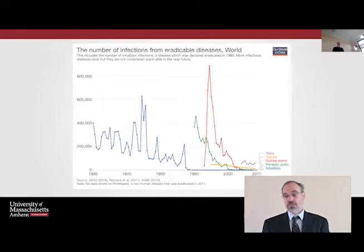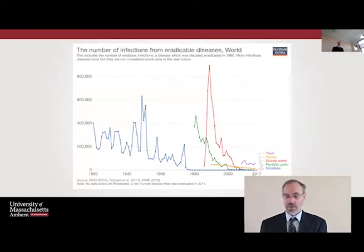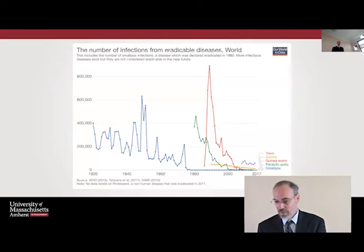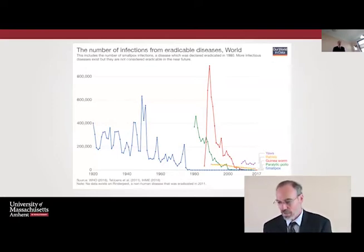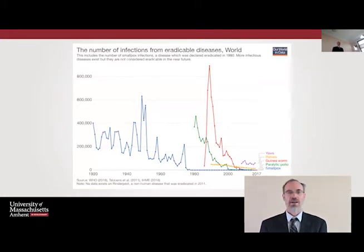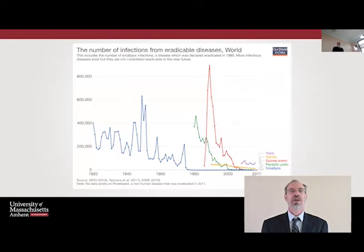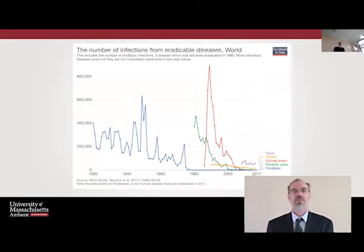Looking at the number of infections from eradicable diseases around the world, we can see that smallpox is a major success, but there are diseases like yaws, rabies, guinea worm, and paralytic polio that are declining rapidly but are obviously hanging on in certain areas, particularly guinea worm and yaws.